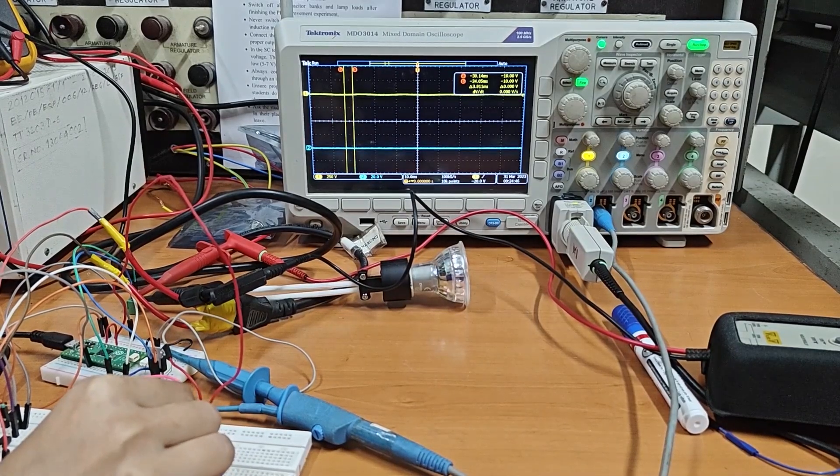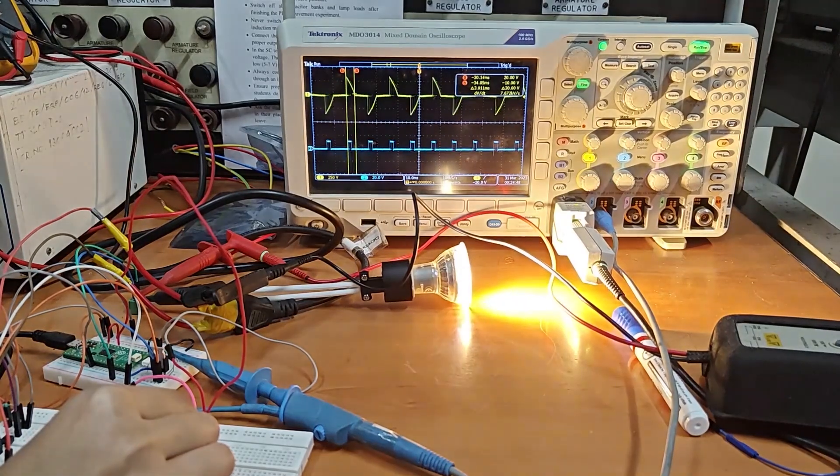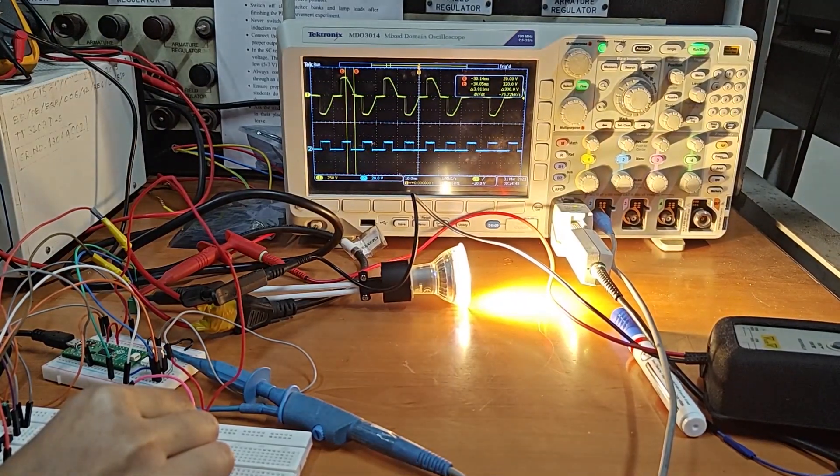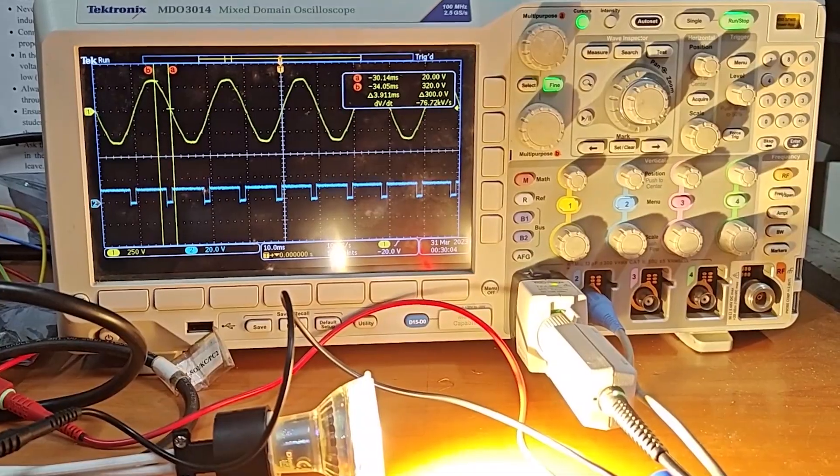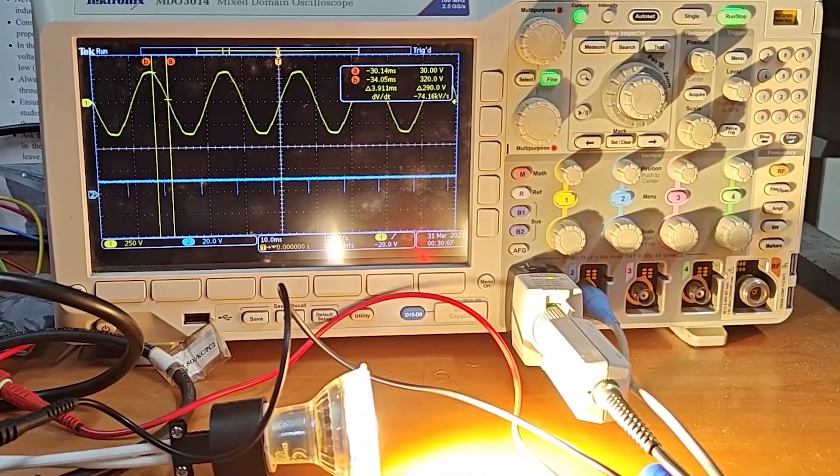Now that I've connected the zero crossing detection pulse at the microcontroller input in interrupt mode and a potentiometer at one of the ADCs to get analog input for controlling the brightness level of the light,